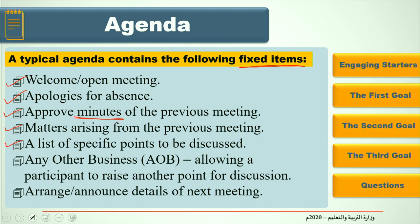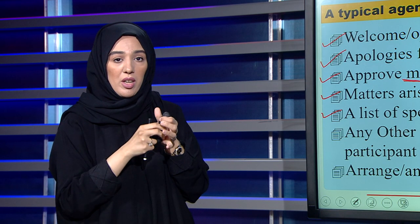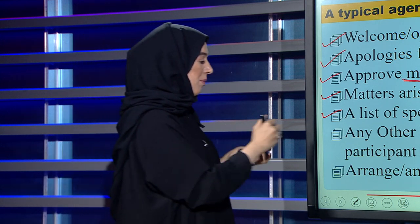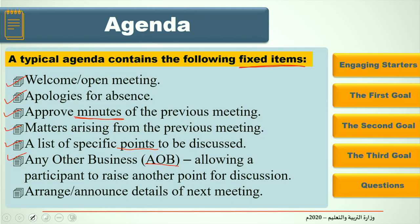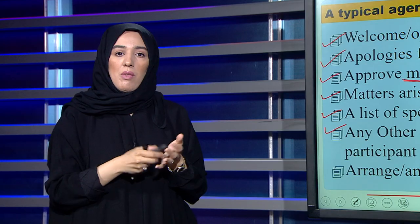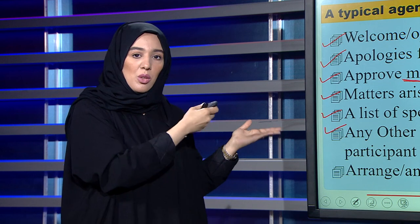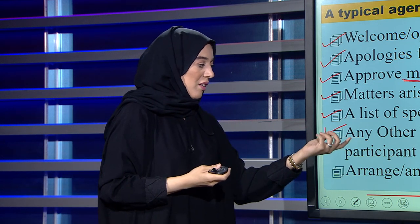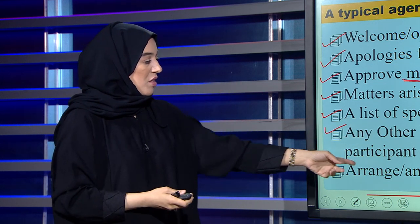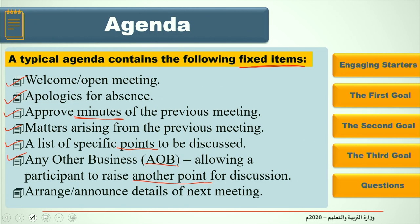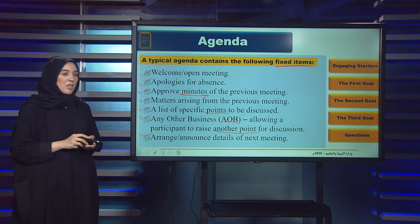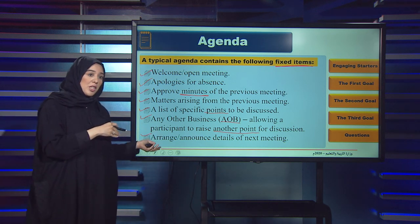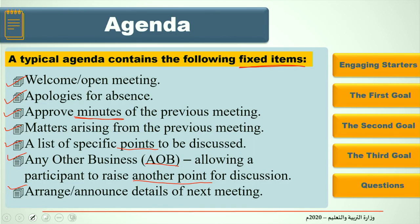Number five: list of specific points to be discussed — these are the points for today's meeting. Then, any other business or AOB: if a participant wants to raise a point not related to the main topic, it is raised under any other business. Finally, arrange or announce details of the next meeting: the chairman, before members leave, tells them when and where the next meeting will be held — for example, next week at 10 o'clock in conference room number two.